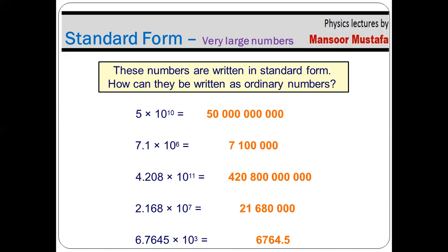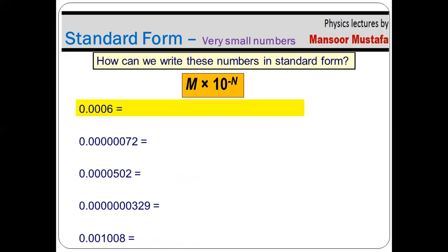Now we'll look at small numbers — numbers which are less than 1. If we have these types of numbers and want to convert them into standard form, the procedure is quite the same. As mentioned, n is a positive or negative integer — it was positive for larger numbers and will be negative for smaller numbers. First, identify the position of the decimal, then shift the decimal after the first non-zero value, and multiply by 10.